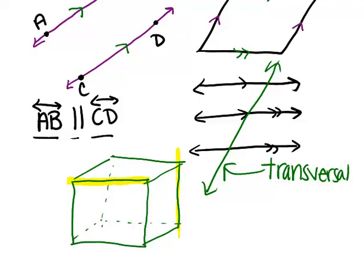So these two lines are skew lines, because they will never intersect if you were to extend them on forever. And they're also not in the same plane. So they're not technically parallel lines. They're called skew lines.